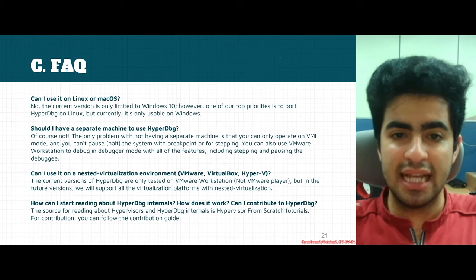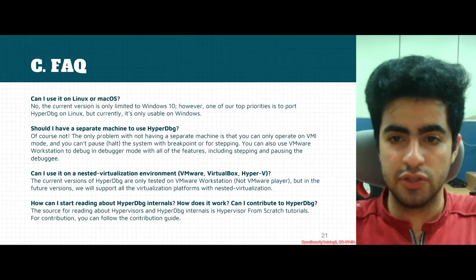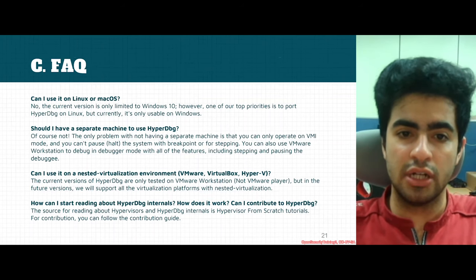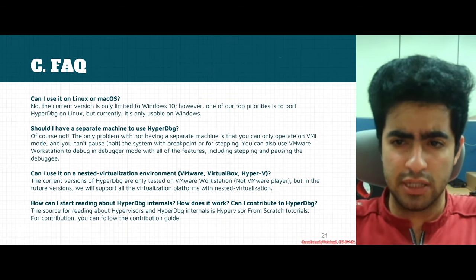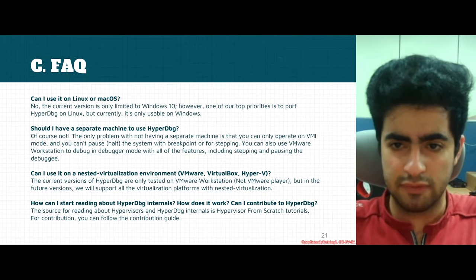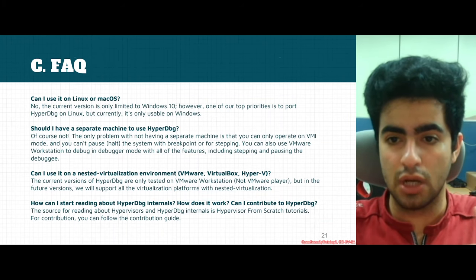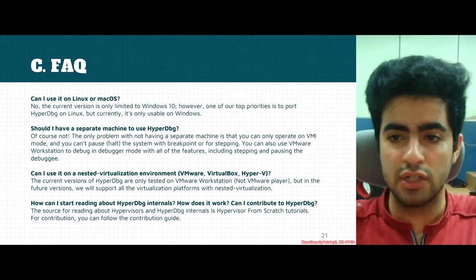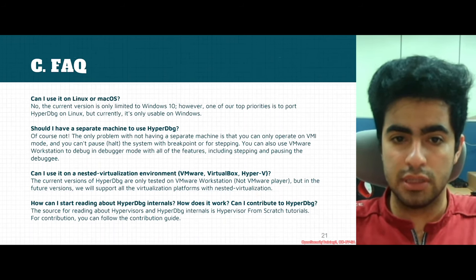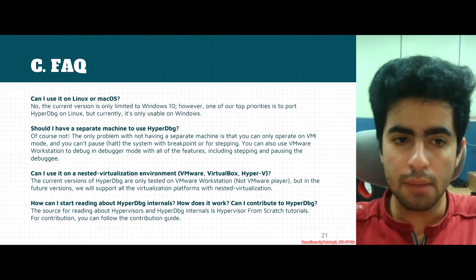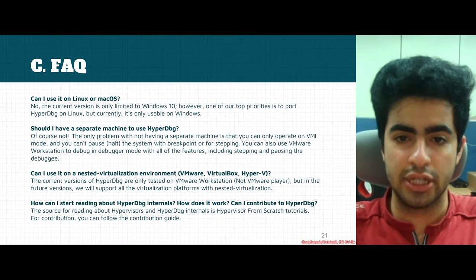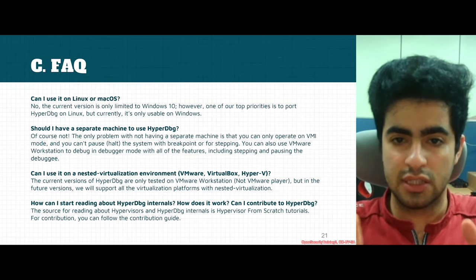Can you use HyperDBG in a nested virtualization environment like VMware, VirtualBox, or Hyper-V? The current version has only been tested on VMware Workstation. VMware Player may not support nested virtualization, and if it doesn't, HyperDBG cannot run on it. Future versions will probably support all virtualization platforms including Hyper-V. HyperDBG is well tested on VMware Workstation and on physical machines without any nested virtualization environment.